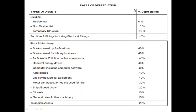Rates of depreciation by asset type: Buildings — residential 5%, non-residential 10%, temporary structure 40%. Furniture and fittings including electrical fittings 10%. Plant and machinery — books owned by a professional 40%, books owned by a library 40%, air and water pollution control equipment 40%, renewable energy equipment 40%, computers including software 40%, aeroplanes 40%, life-saving medical equipment 40%, motor cars, buses and lorries 30%, ships 20%, oil wells 15%, general plant and machinery 15%, intangible assets 25%.